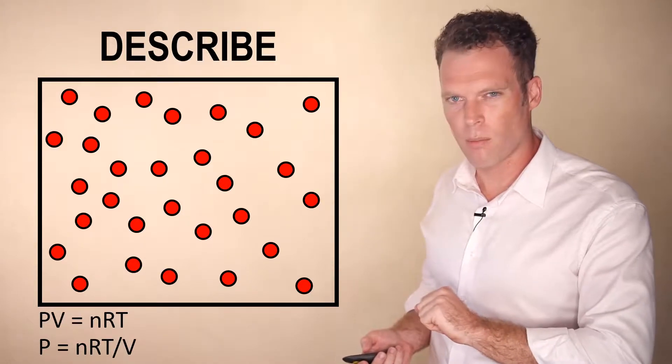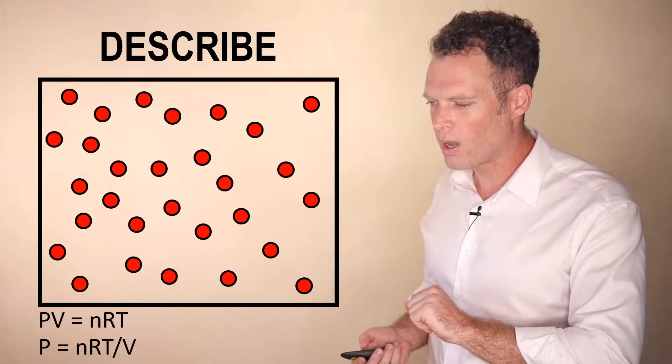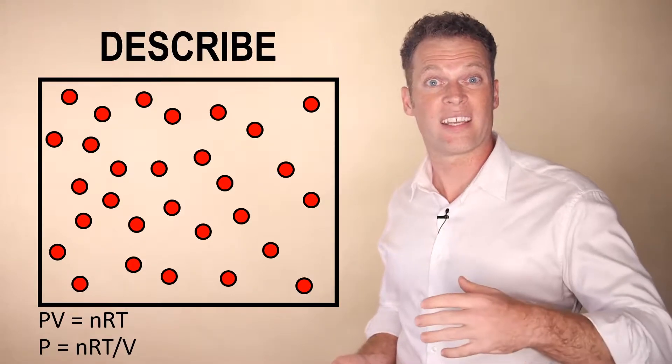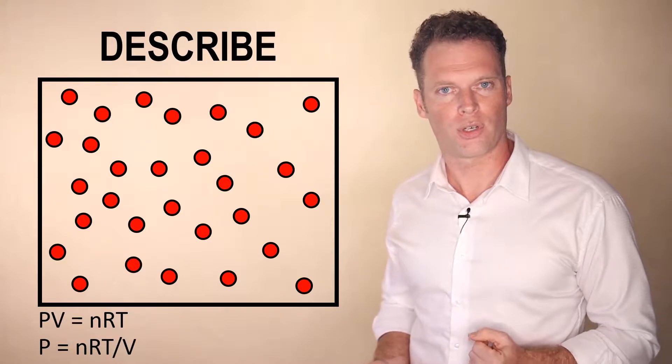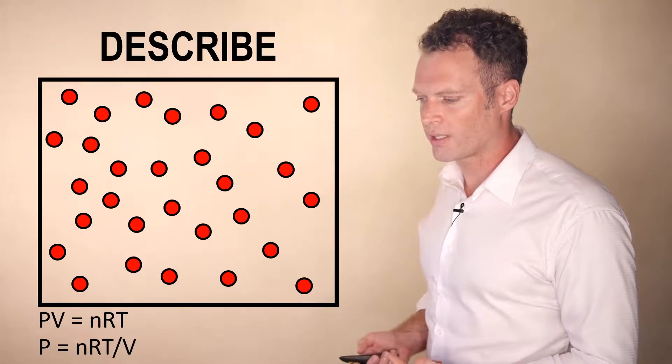Of course, n, the number of moles, didn't change. The molecules are the same number as before. R, the universal gas constant, is constant. It doesn't change. And we'll assume the temperature didn't change during this transition.